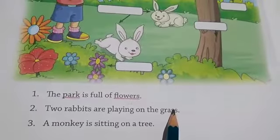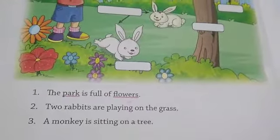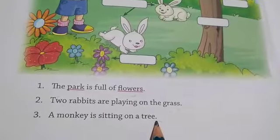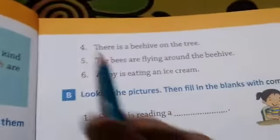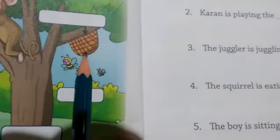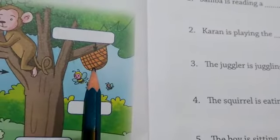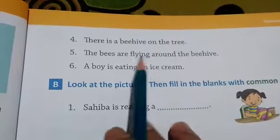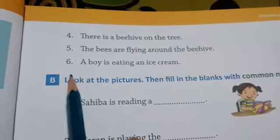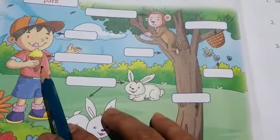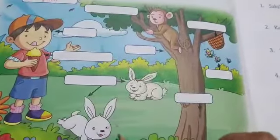A monkey is sitting on a tree — which is the common noun? Monkey and tree. There is a beehive on the tree — beehive and tree are common nouns. The bees are flying around the beehive — bees and beehive are common nouns. A boy is eating an ice cream — boy and ice cream are common nouns. You have to complete this one also.